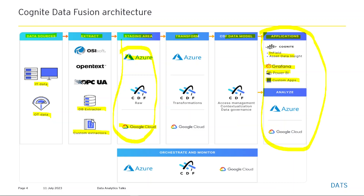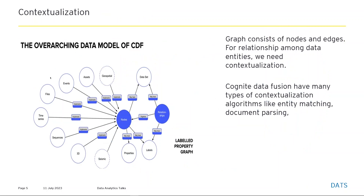Let's see how data is stored in the CDF data model and the relevance of contextualization. Data is no longer stored as plain structured data — it's a labeled property graph with nodes and relationships. The graph consists of nodes and edges representing relationships among data entities. Contextualization is required so that data coming from the source is processed using algorithms like entity matching and document parsing to get the right fit to the CDF model.